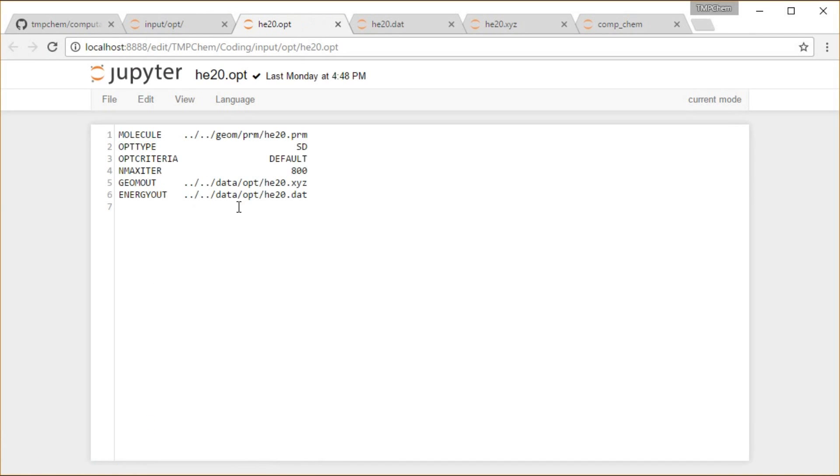Basically, just an input file that I made saying where the molecule is that I want. The type is called steepest descent, which I'll talk about in the next video. Default criteria as far as the values of the gradient magnitude convergence, energy convergence that I have, maximum number of iterations, and where the output's going to go.